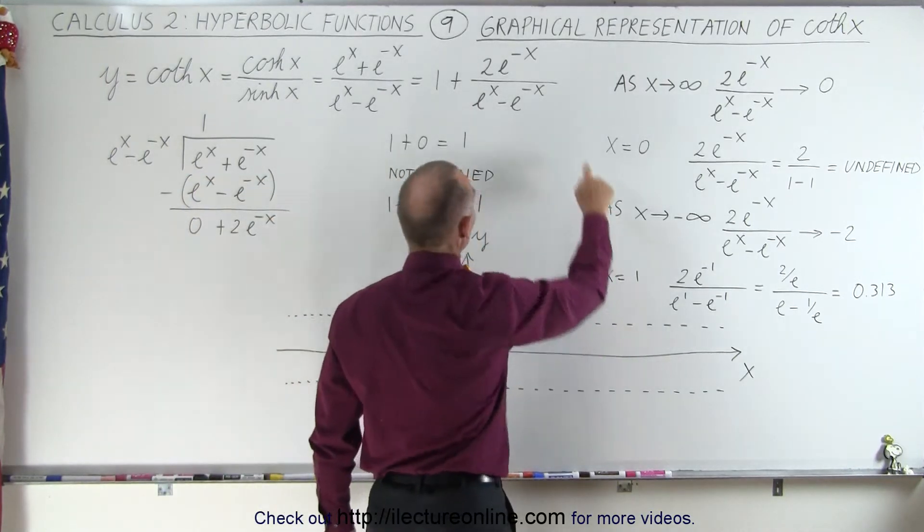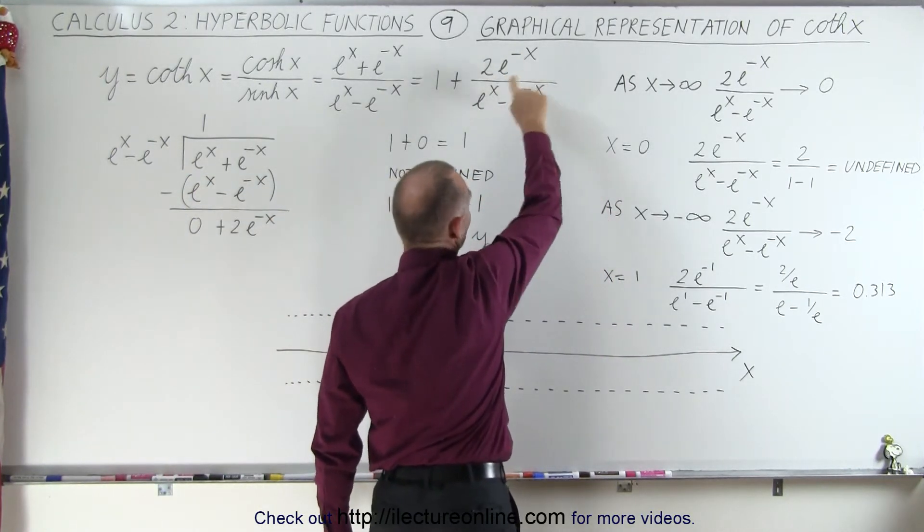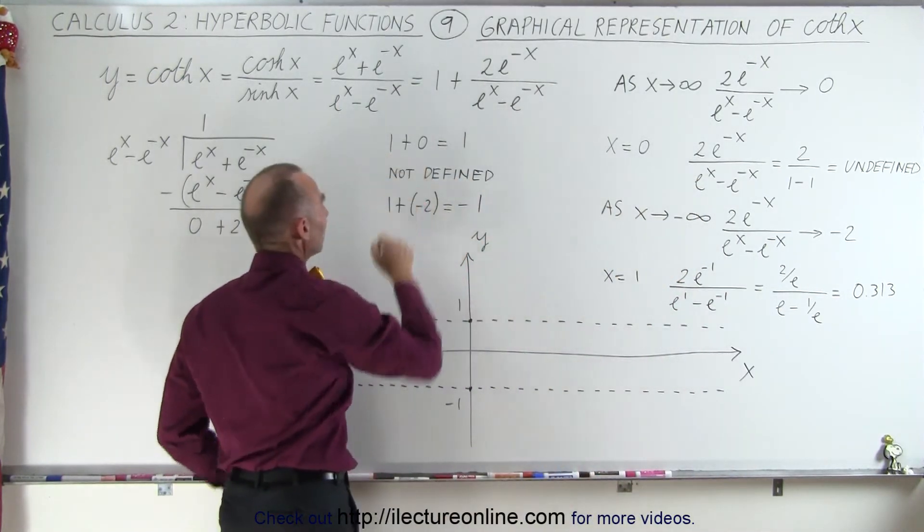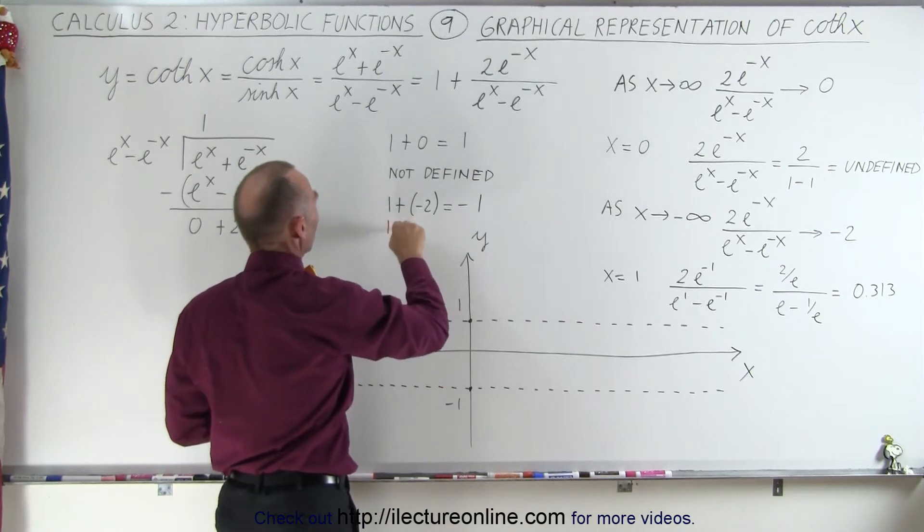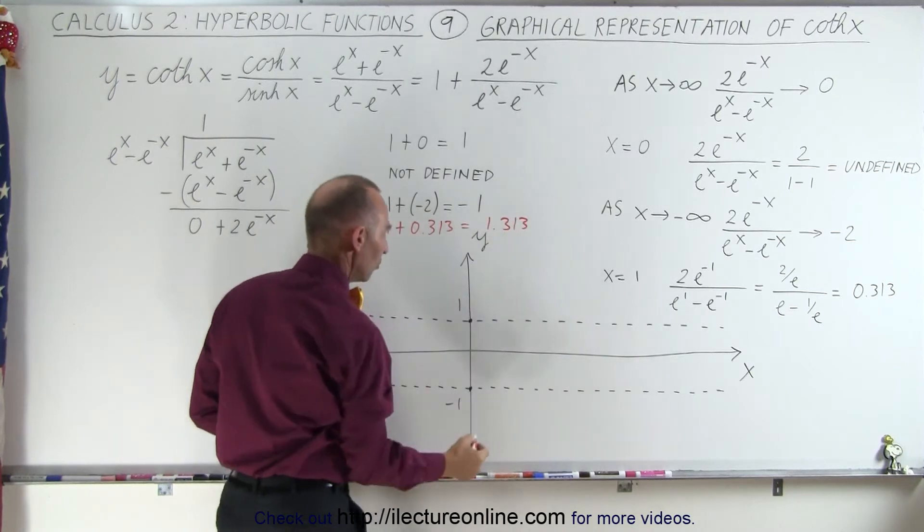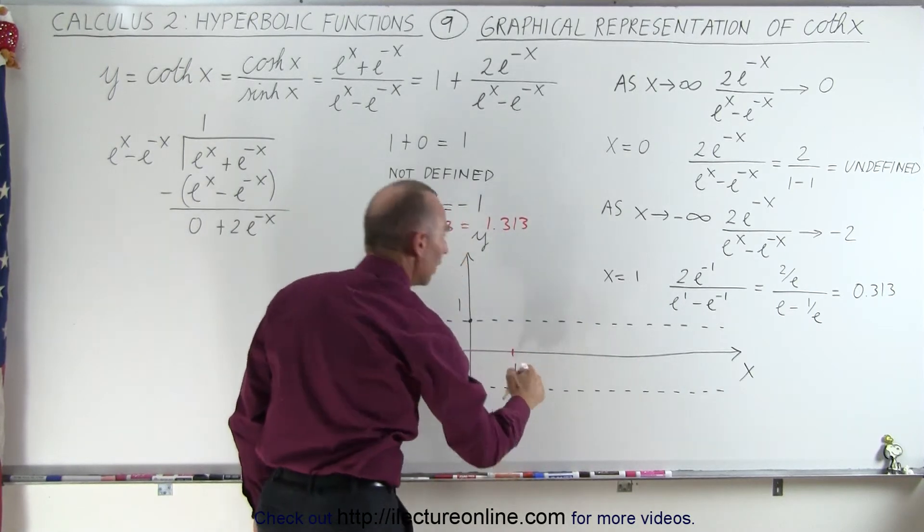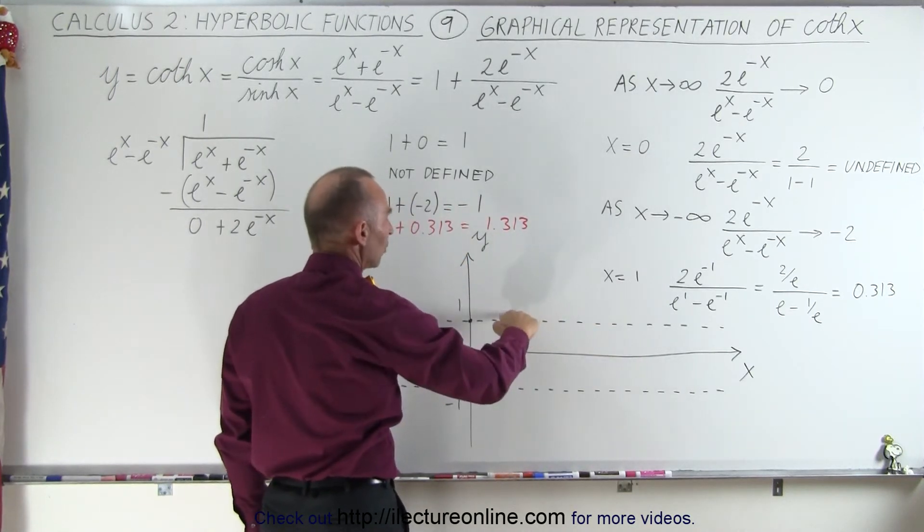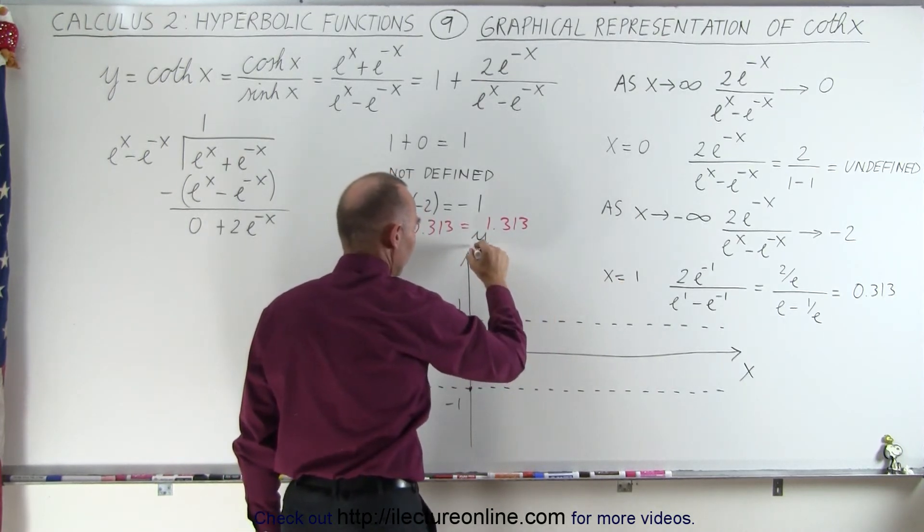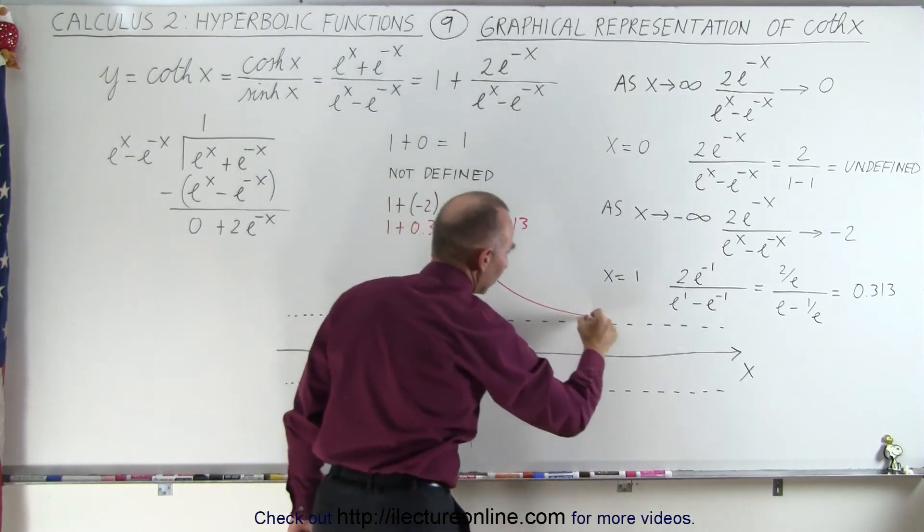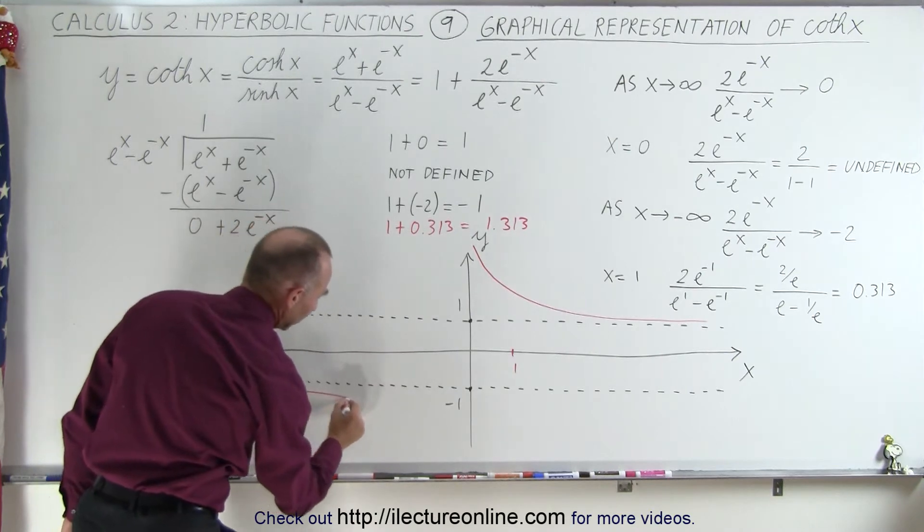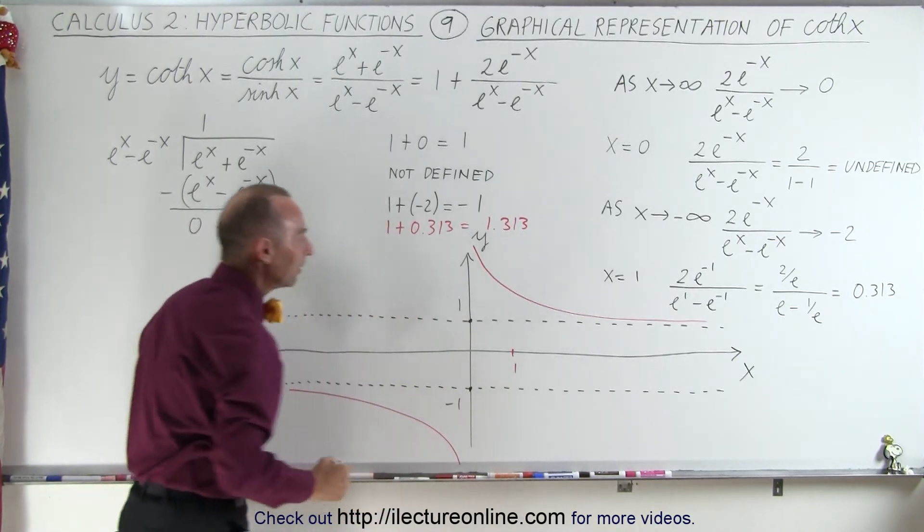When x equals 1, we plug in 1 and evaluate to get 0.313. When we add that to 1, we get 1 plus 0.313, which equals 1.313. So when x equals 1, y equals something larger than 1, which gives us assurance that the function will look like this, and we'll have a mirror image on the other side.